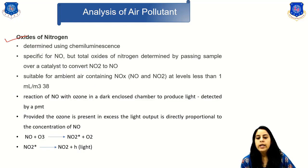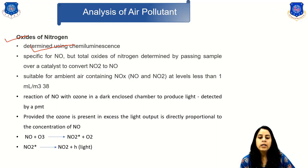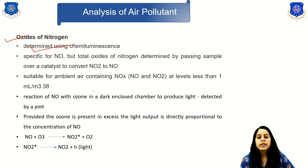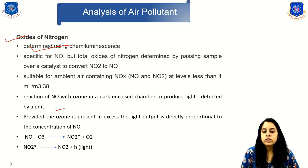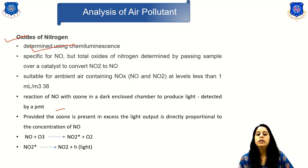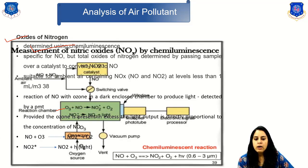The second pollutant analyzed is oxides of nitrogen (NOx). It is determined using chemiluminescence, which is specific for nitrogen oxide (NO). Total nitrogen oxides are determined by passing the sample over a catalyst to convert NO2 to NO. This is suitable for ambient air containing oxides of nitrogen at levels less than 1 mL per m³. The reaction of NO with ozone in a dark enclosed chamber produces light detected by a photomultiplier tube (PMT). With ozone in excess, the light output is directly proportional to the NO concentration. The reaction is: NO + O₃ → NO₂ + O₂, followed by NO₂* → NO₂ + light.